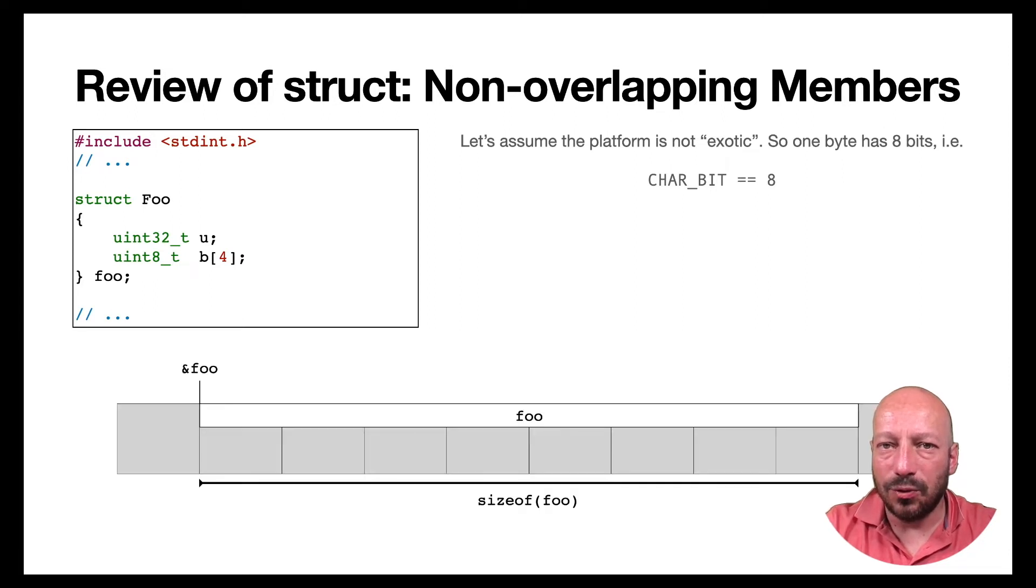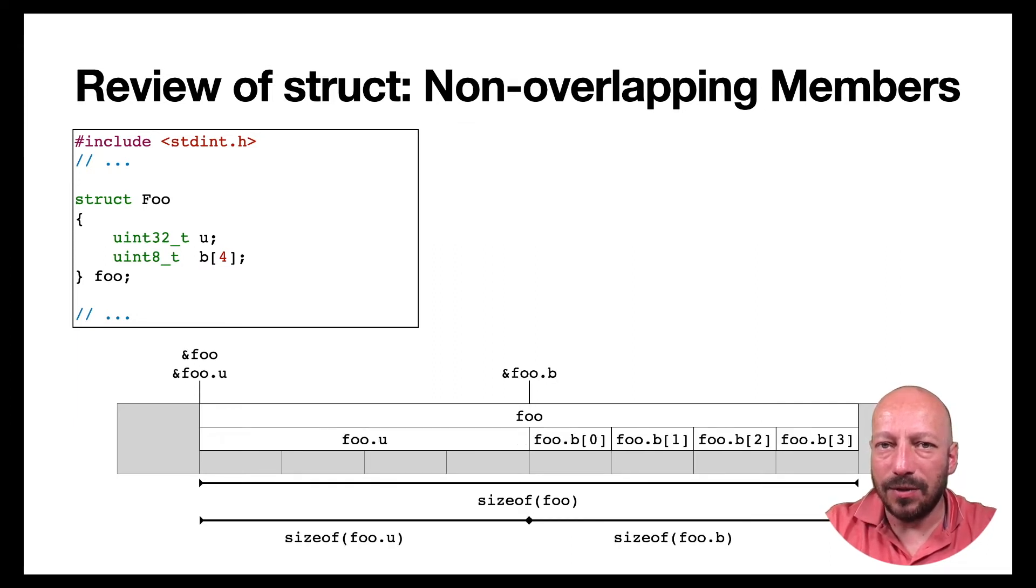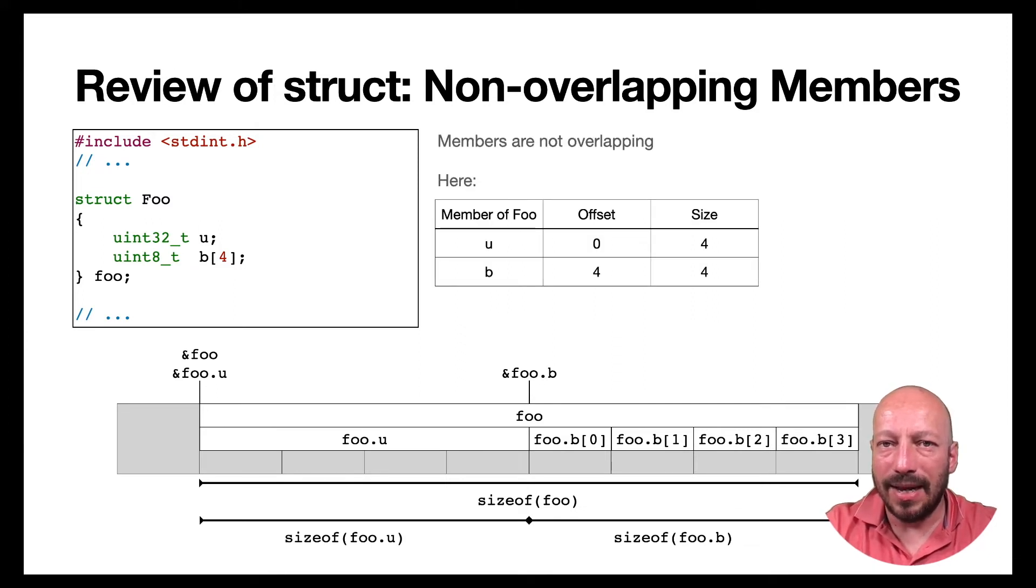And this is true even if you have alignment restrictions. Because this first member, of course, needs to be aligned then to an address which is a multiple of four. But this second member, which consists of single bytes, can come right after that. And the compiler makes sure that these two members do not overlap by keeping track of offsets for these members. The offset for the first member would be zero. And the offset for the second member would be four.